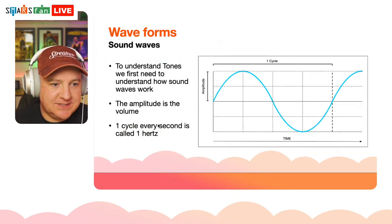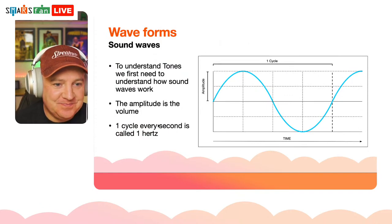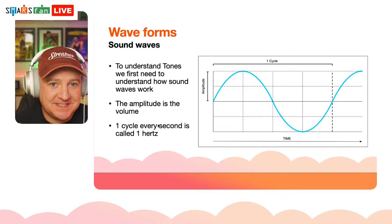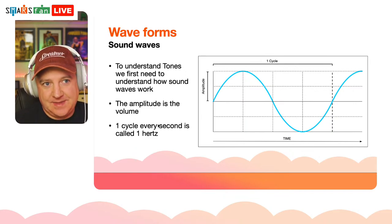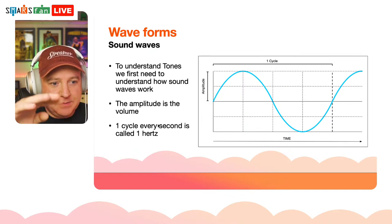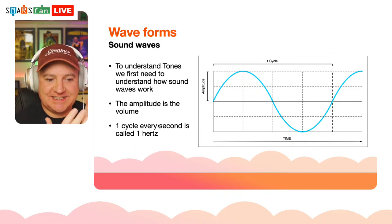Let's talk about waveforms. If you think back to physics, sound is just the compression of air. The number of times that compression cycle happens per second determines the pitch. We have an amplitude — the height of the wave — and the waveform cycles up and down over time. One cycle equals one hertz, so one sound wave per second is one hertz.